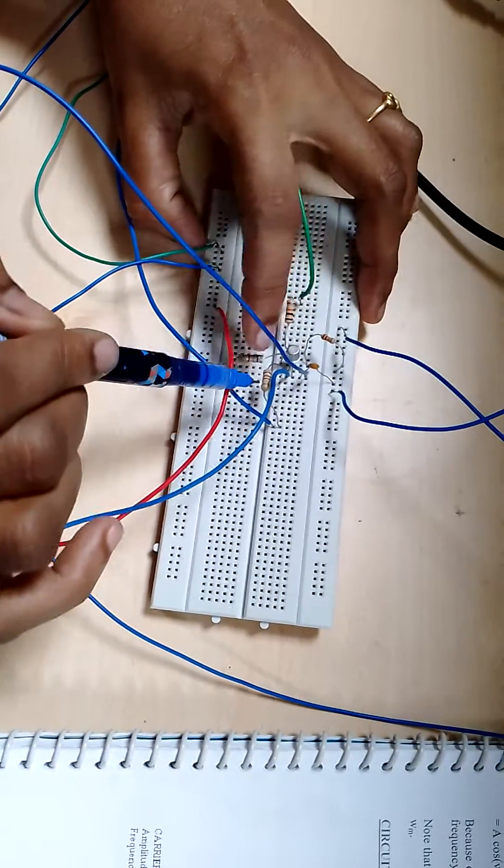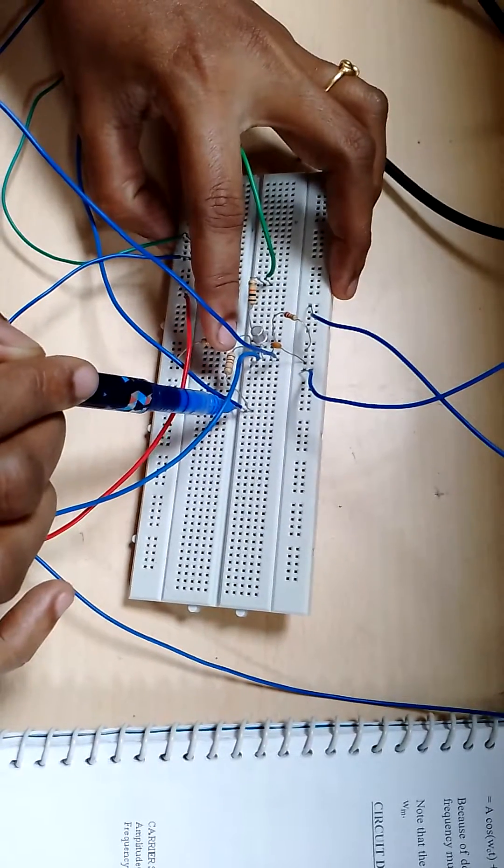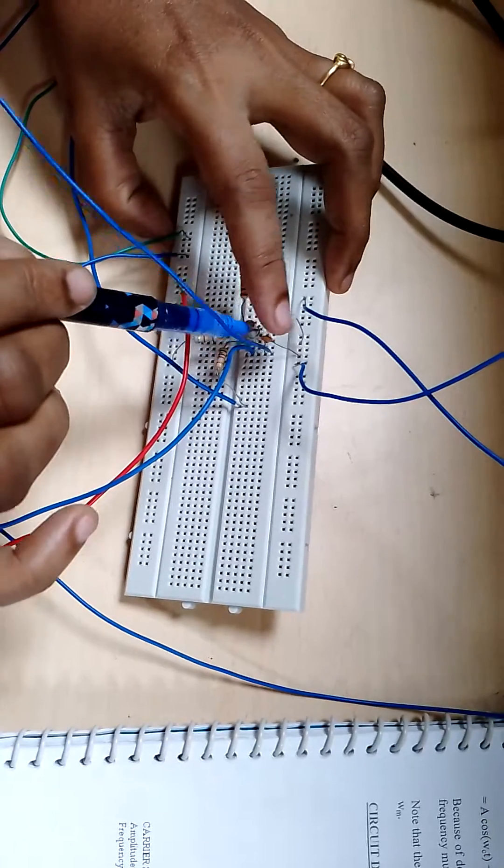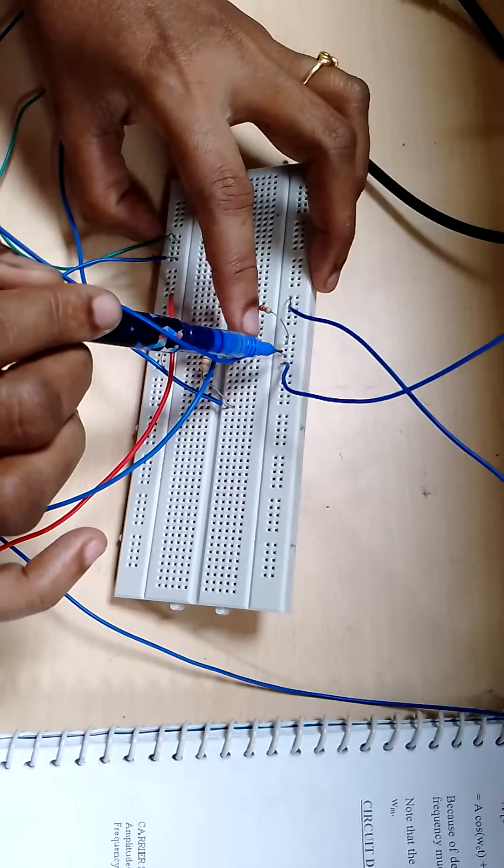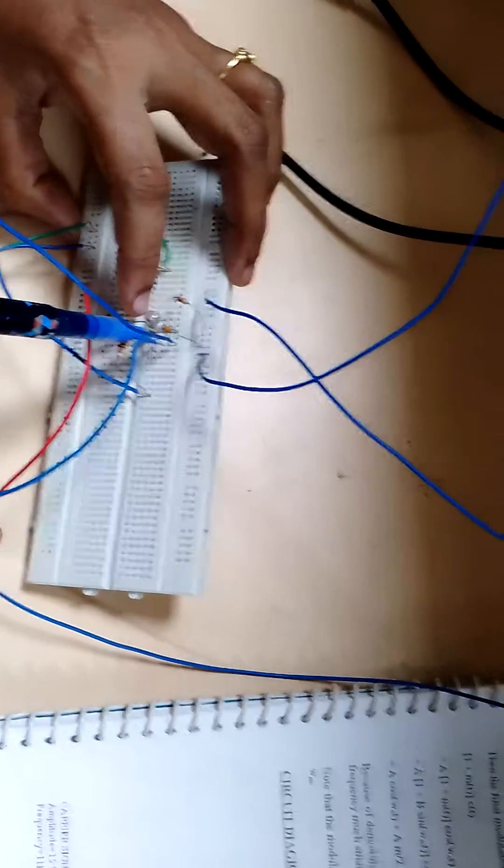From the base, another 1 kilo ohm resistance is connected to the carrier signal. From the collector, we have a capacitor of 0.01 microfarad connected to the supply VCC.